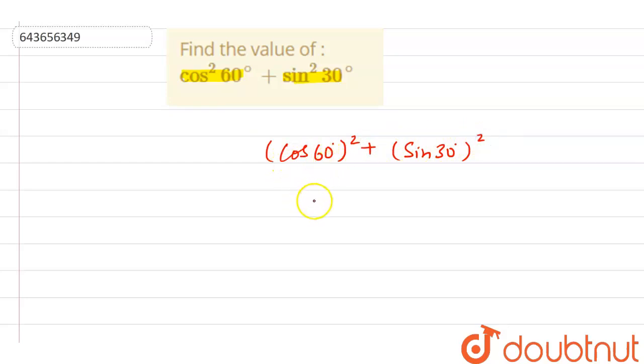And as we know that cos of 60 degree equals 1 by 2, so it is 1 by 2 whole square. Plus sine of 30 degree is also equals to 1 by 2, so it is 1 by 2 whole square.